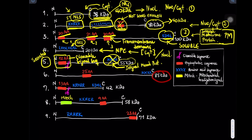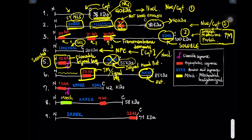Protein number six has a molecular weight of 85 kDa and contains one hydrophobic sequence of 25 amino acids located in the middle of the protein — long enough to act as a transmembrane domain. Since there are no other hydrophobic sequences, this single sequence also acts as a signal sequence. The motif at the carboxyl end of the protein is the type of sequence that, for integral membrane proteins, acts as an ER retrieval sequence. Therefore, protein number six is likely an integral membrane protein of the endoplasmic reticulum.